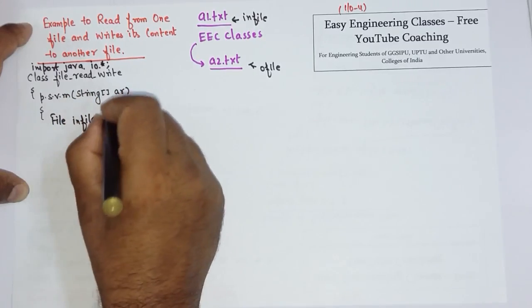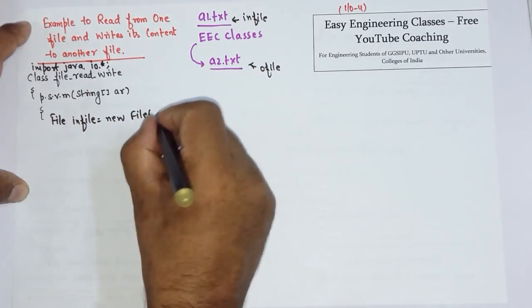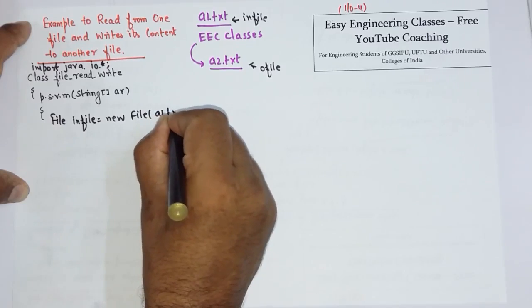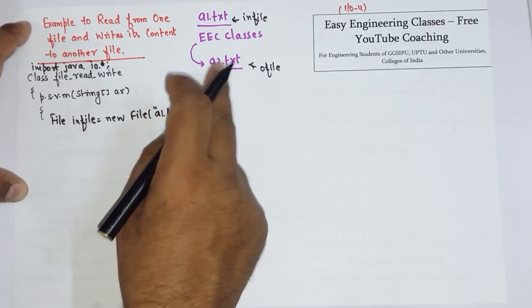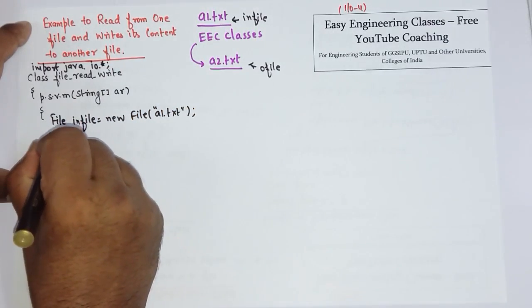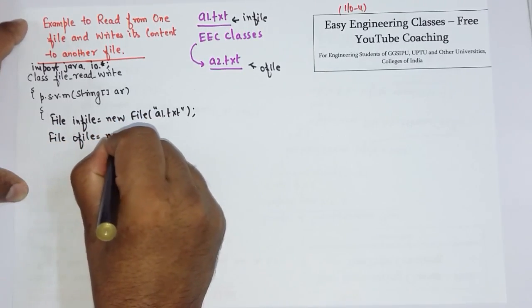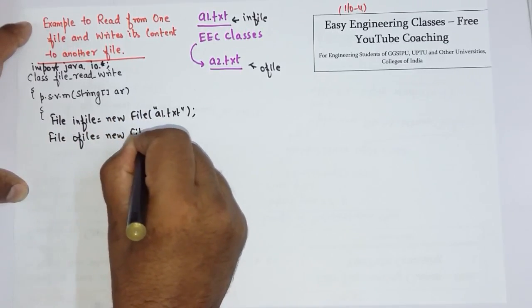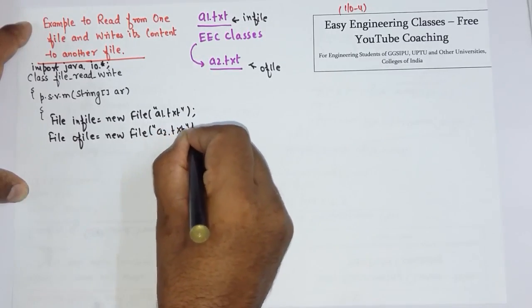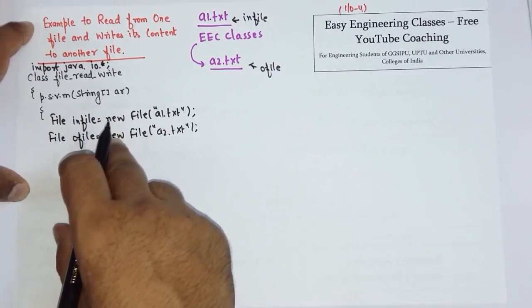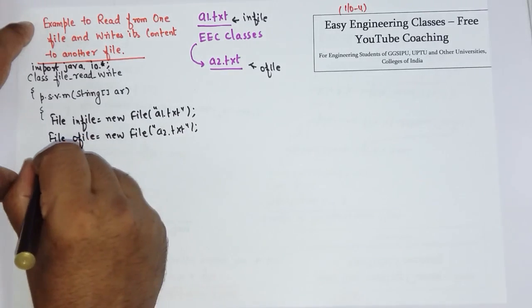File o-file equals new File("a2.txt"). So this is for reading of the contents and this is for writing of the contents. Now create objects of FileReader and FileWriter.